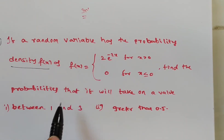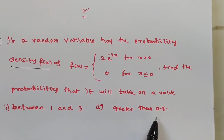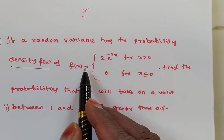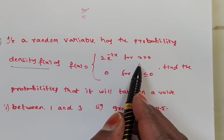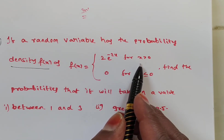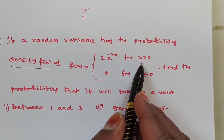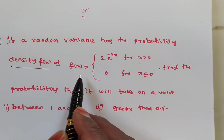We are given the density function and we have to find the probability from 1 to 3 and greater than 0.5. Observe that for x greater than 0, the value of f(x) is 2e to the power minus 2x. X greater than 0 takes every real value — 0.1, 0.2, 0.3 and so on — not just integers. So this is a continuous random variable.